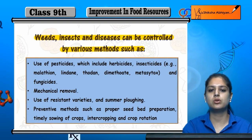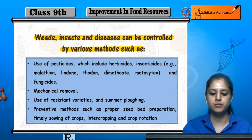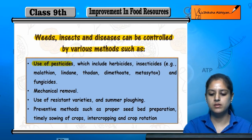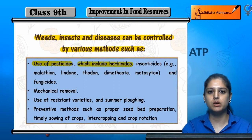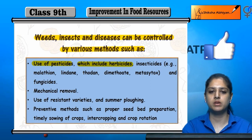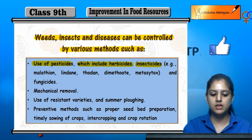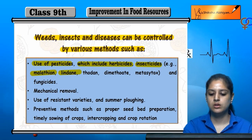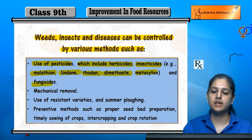First is pesticide use, which includes herbicides — which are herbal-based chemicals to reduce weeds. Insecticides use, like malathion, lindane, thodane, etc. And fungicides use to control fungal diseases.